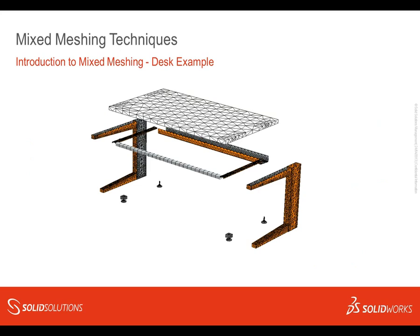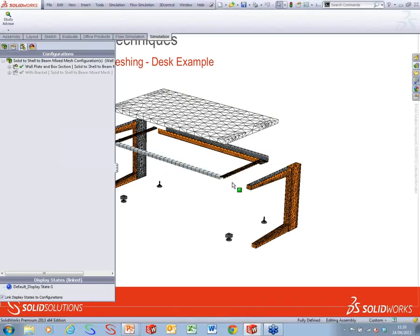Before diving into theory, let's look at what a mixed mesh looks like using the desk example. The orange elements are the bottom sides of shells, the grey inside the channel at the back is the top side — so the leg structures are all shells. The top surface is solid because it's relatively chunky. The four feet are better represented with solids. Across the front there's a beam representation. Let me pop back to SolidWorks to show this in reality.